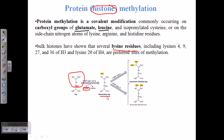After single methylation, arginine will be called monomethyl arginine. Then a second round of methylation is possible, and it can be of two types. If two methyl groups are attached to the same single nitrogen, it is called asymmetric dimethylation. If the two methyl groups are on two different nitrogens, it is called symmetric dimethyl arginine. So arginine can produce monomethyl arginine, asymmetrical dimethyl arginine, or symmetrical dimethyl arginine.